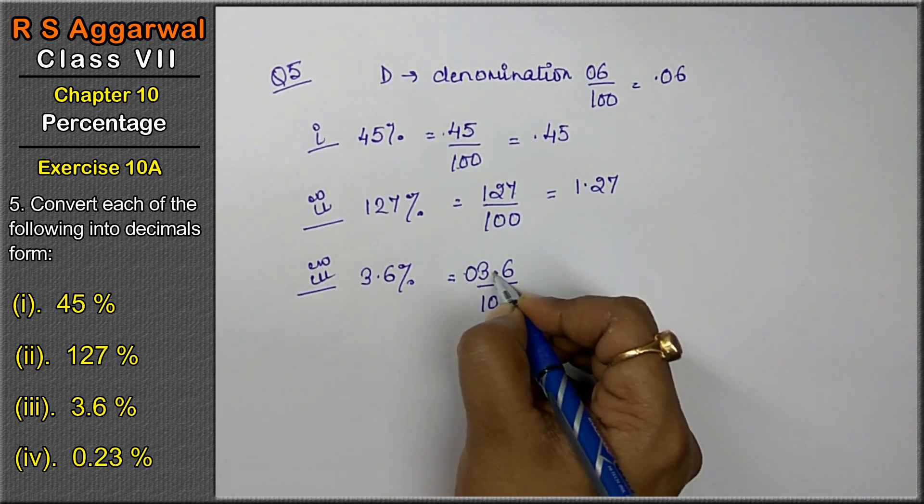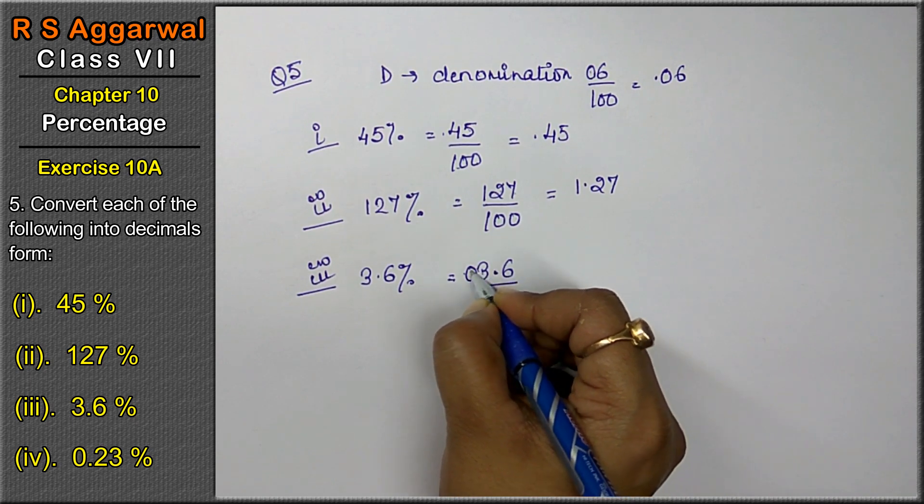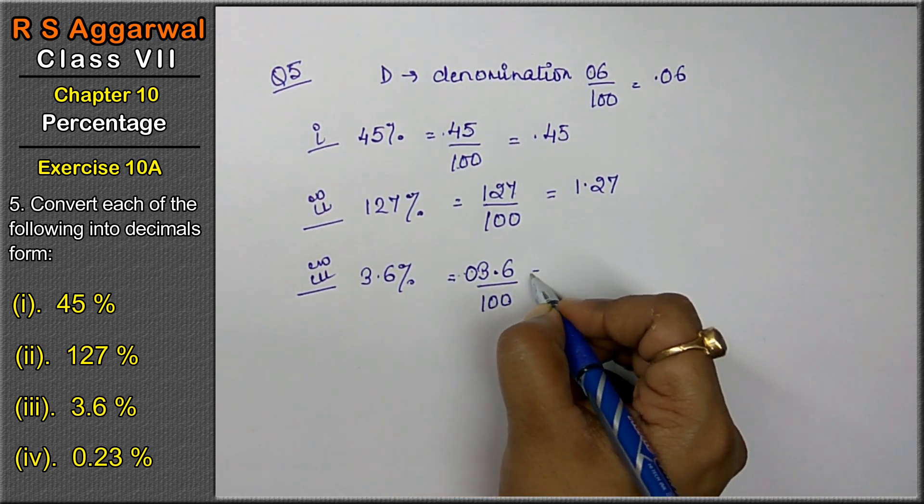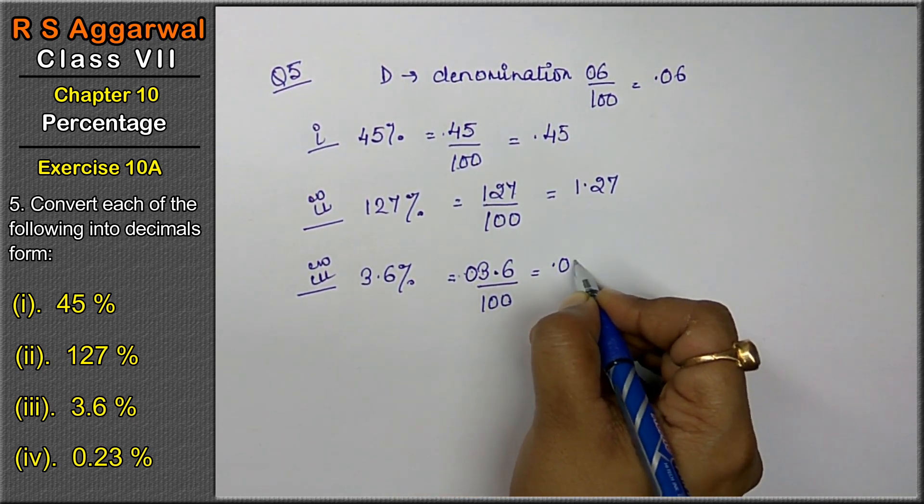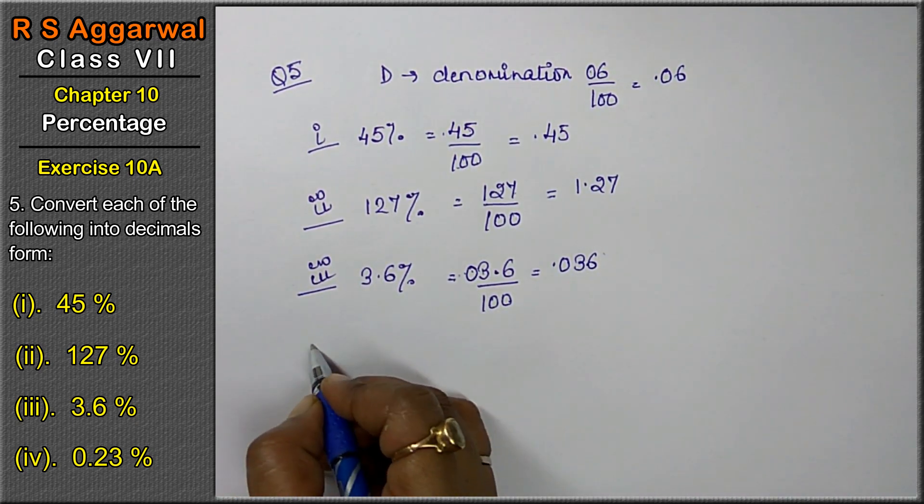So 2 values ahead, nothing is written here, that means 0. So 2 digits ahead, the point will come, that means 0.036 is the answer.